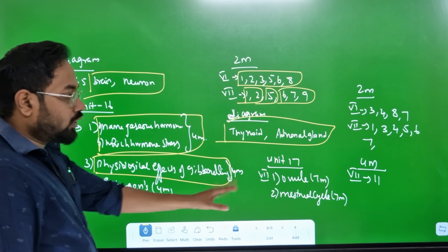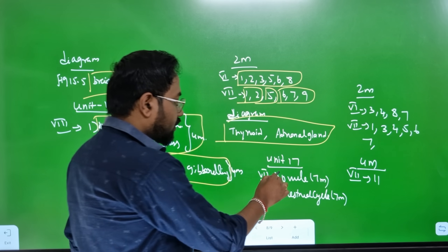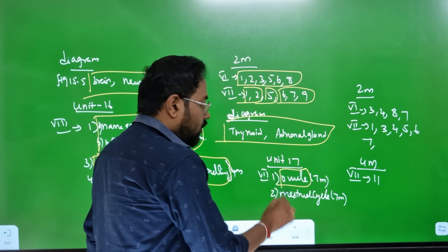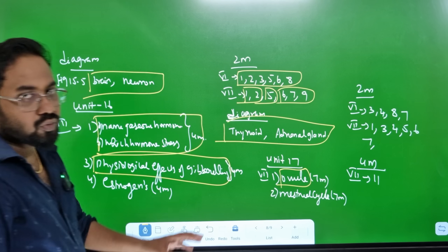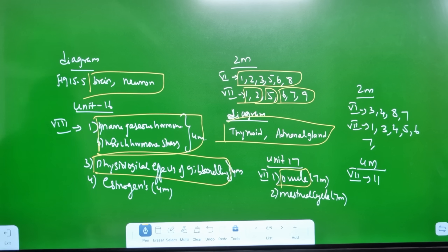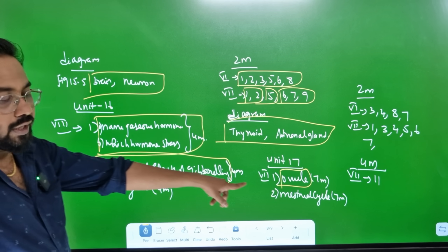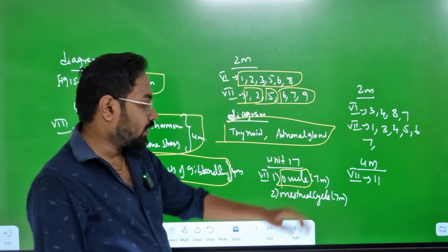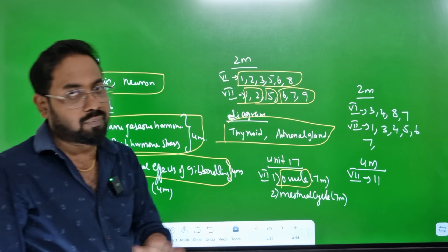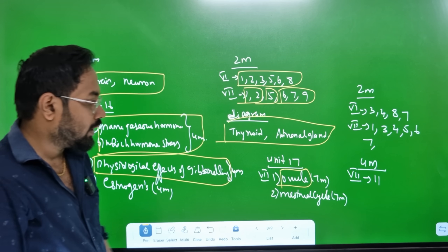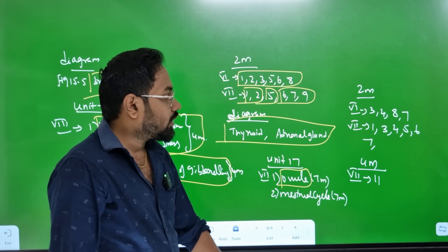Unit 17 - ovule. Sooling diagram - 7 marks. 2 marks.